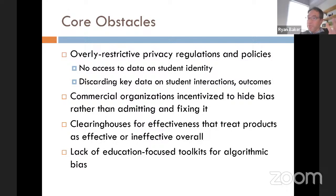Some of the core obstacles: privacy is a big one, and it's a very important goal. The problem is that privacy regulations and policies are often too restrictive in ways that don't increase privacy protection much but strongly reduce the ability to fix problems. For example, having no access whatsoever to data on student identity, rather than carefully managed access.